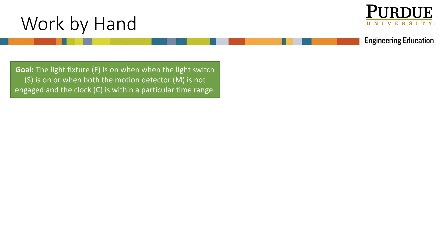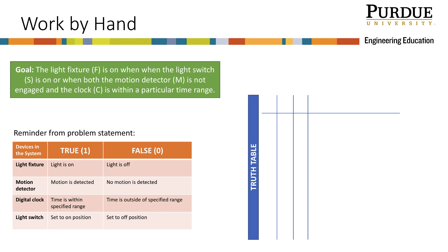Now let's try to work this by hand. The easiest way to do this is to build a truth table. A truth table allows you to determine all of the different possible truth values of a given statement. We will work on filling out this truth table to evaluate our solution by hand. First, remember our goal is to combine the controls of the devices so that when the light switch is on, or when both the motion detector is not engaged and the clock is within a particular time range, the light fixture is on. Also, in order to build our truth table, we will need to remember when our variables are true and false.